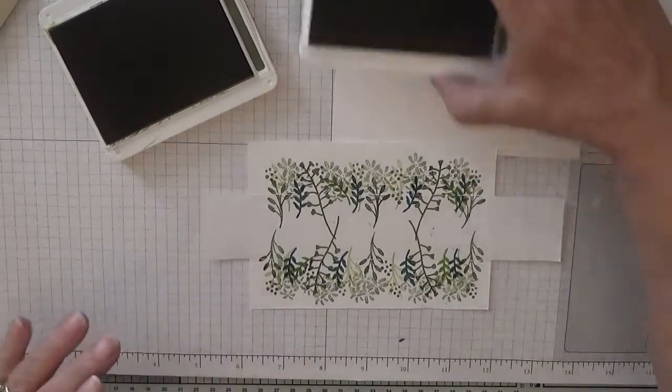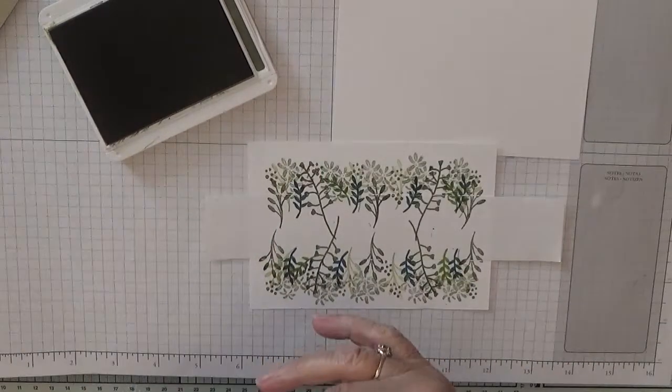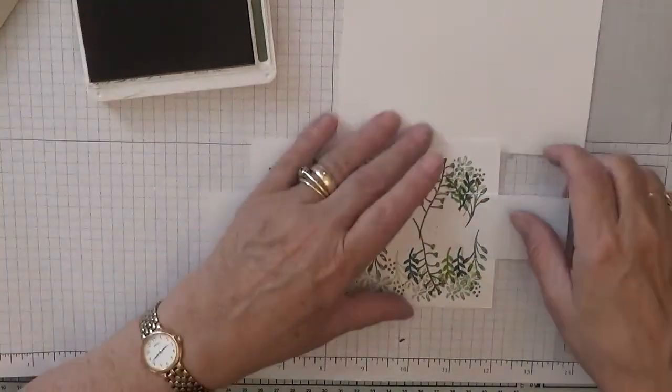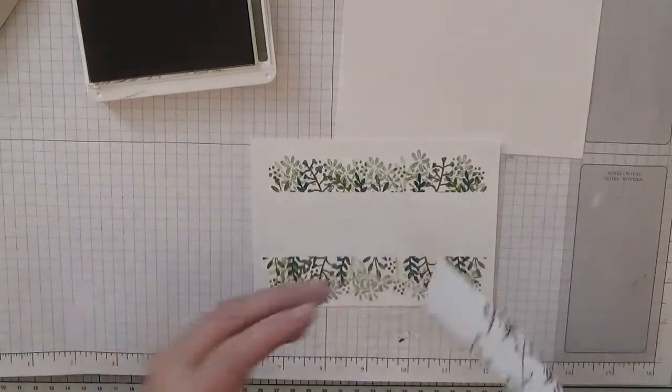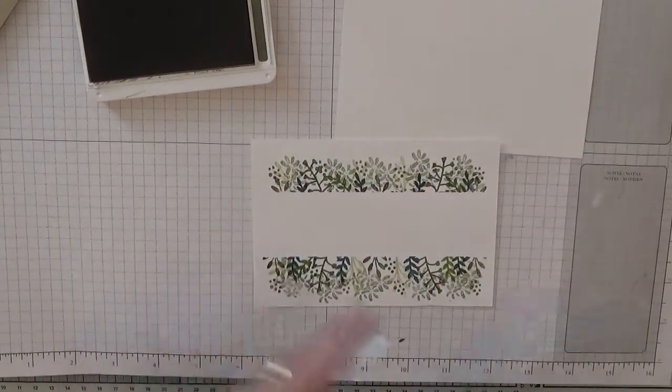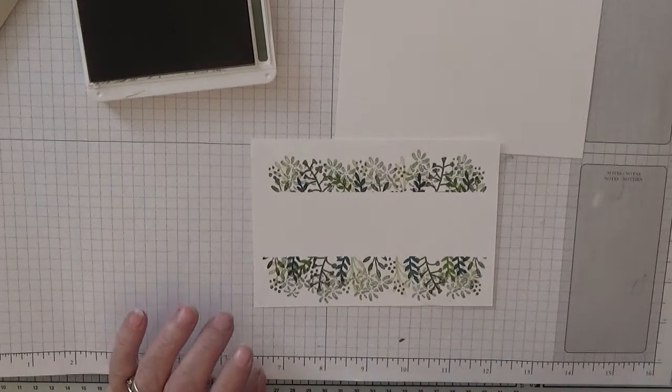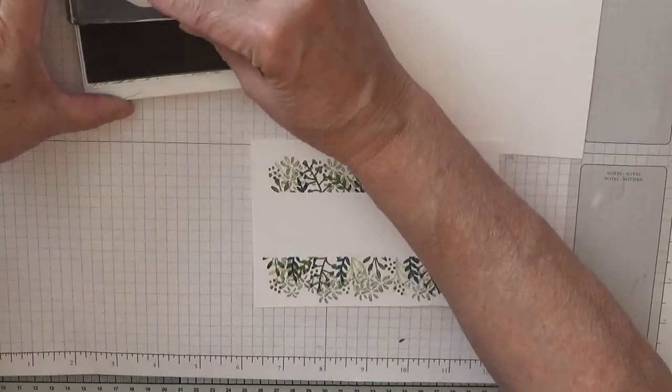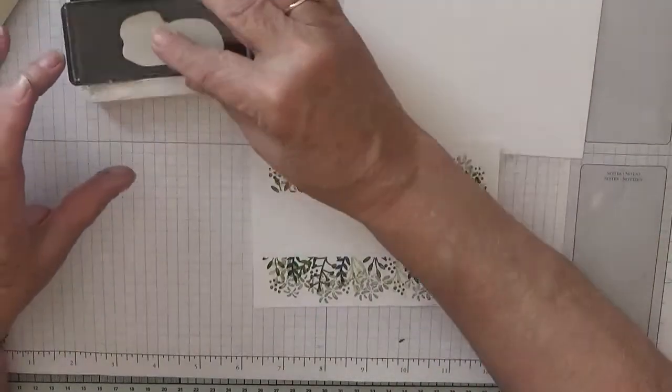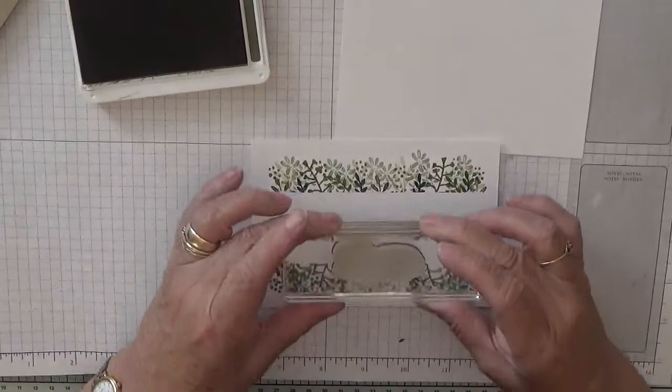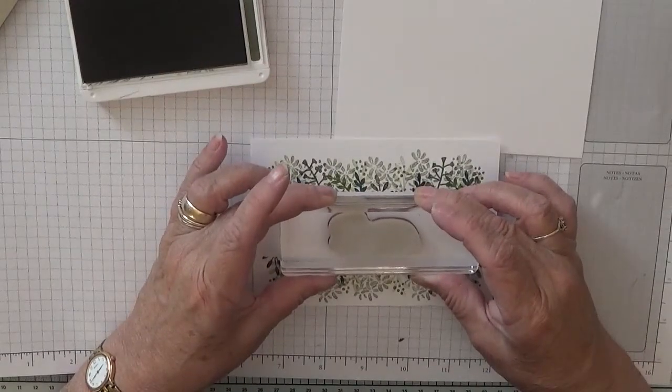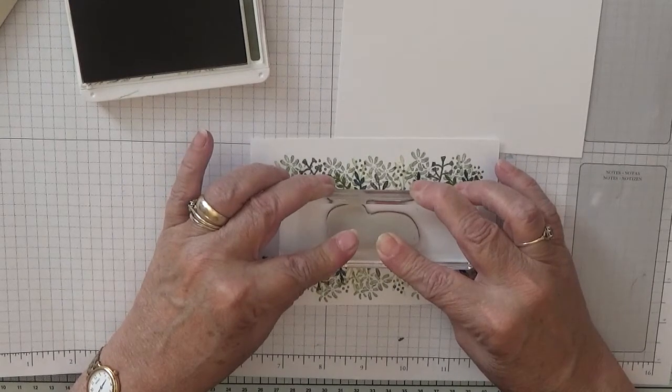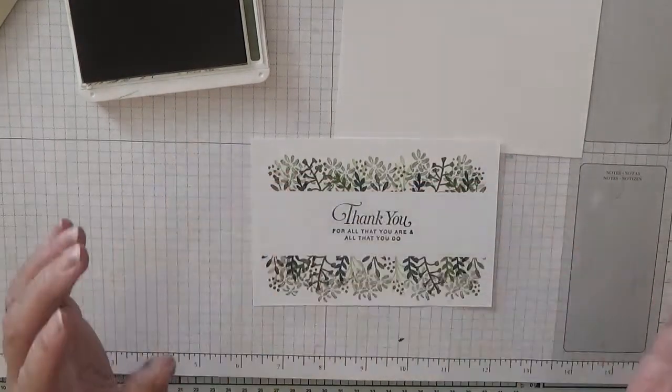I like that. Let's get rid of this. Mossy Meadow I'm going to use again for the sentiment. So pull that off, and ink the sentiment in Mossy Meadow. I'm going to stamp that right in there and pray it's straight. Yeah.